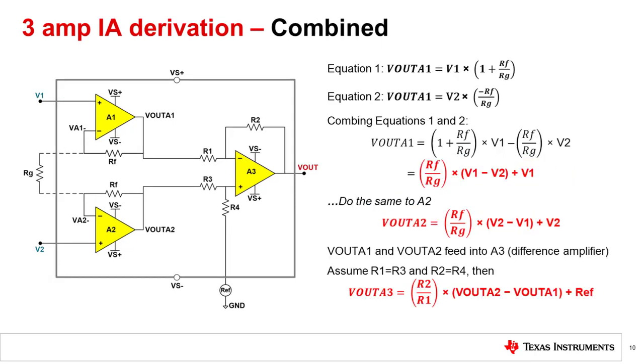Let us now combine equations 1 and 2 to yield the output from amplifier A1 with respect to ground. This reduces to the following equation. If we do the same exercise to A2, then the output of A2 with respect to ground is the following.